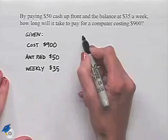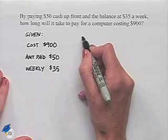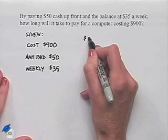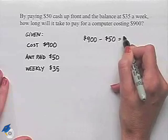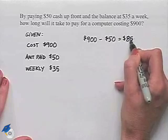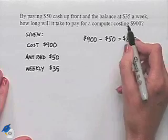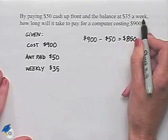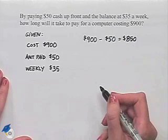Now let's start by taking the total amount and subtracting the $50 paid upfront. So we have $900 minus $50, leaving us with a balance of $850. That $850 needs to be paid off by making payments of $35 a week, and we're trying to find out how long it would take to pay for the computer at this rate.